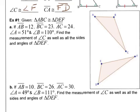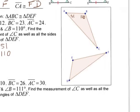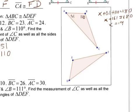Right away we know that angle D equals angle A, so angle D is 51, and angle E is 110. To find angle C, I can say X plus 51 plus 110 equals 180. X plus 161 equals 180, so subtracting 161 from both sides, X equals 19 — meaning angle C is 19.